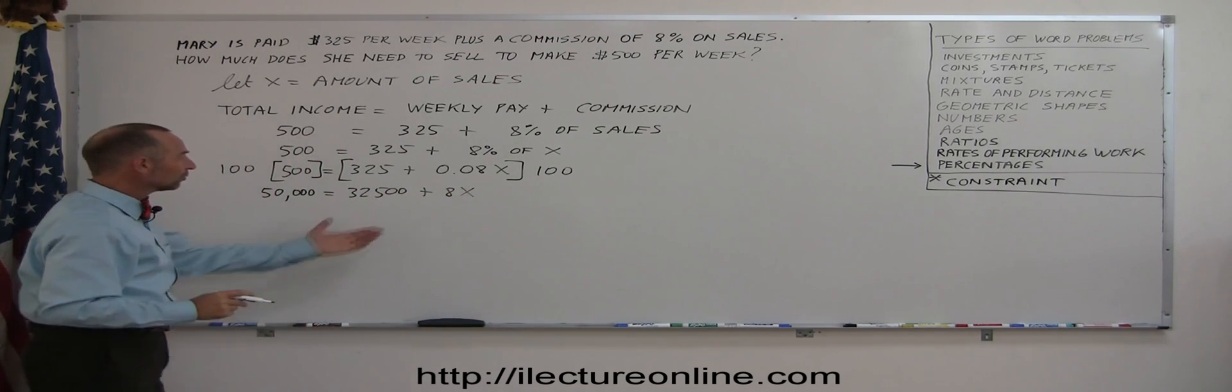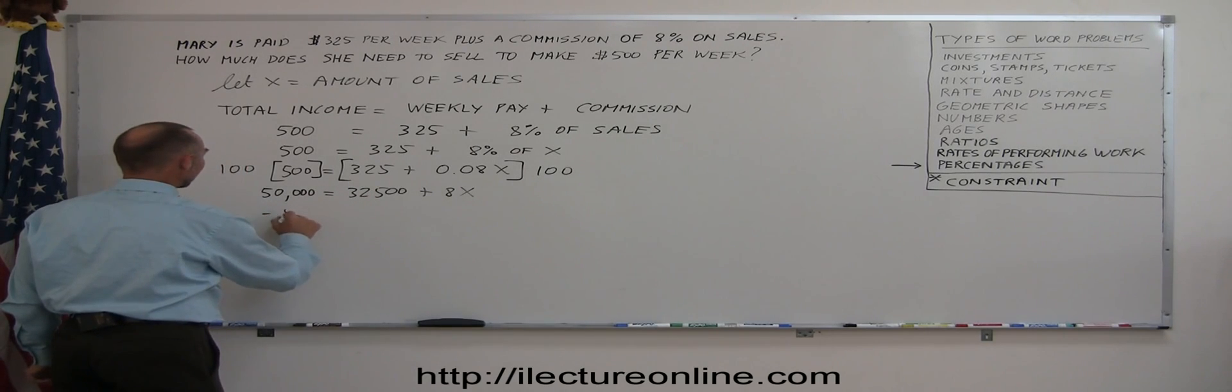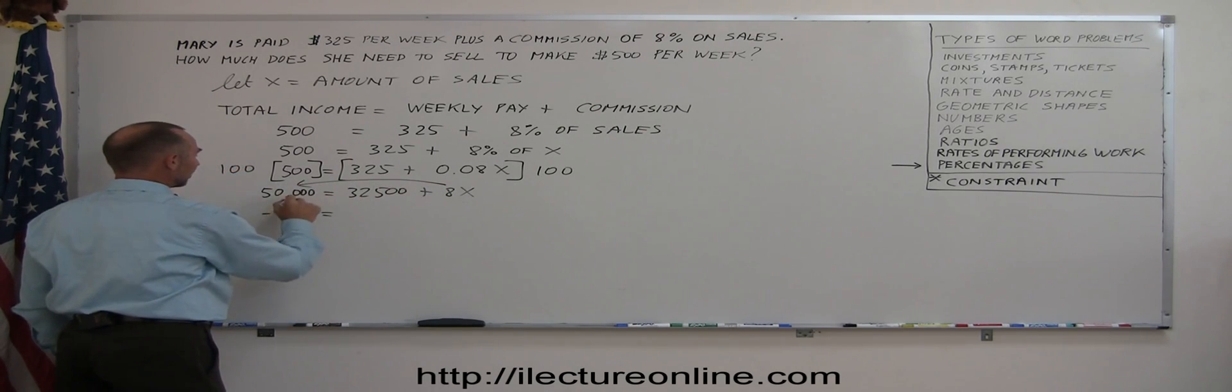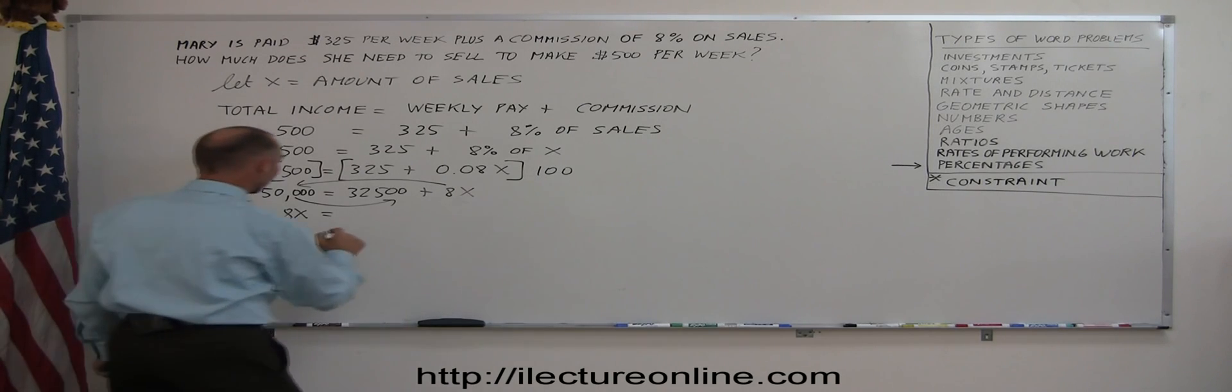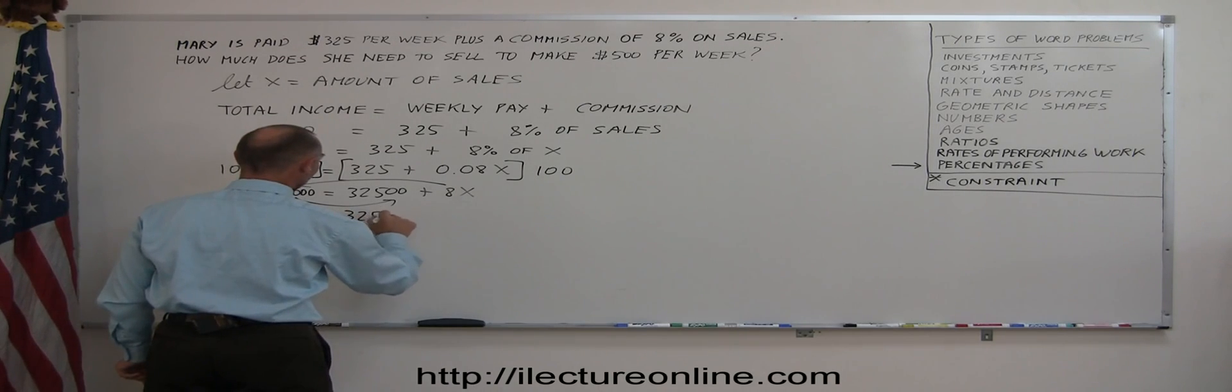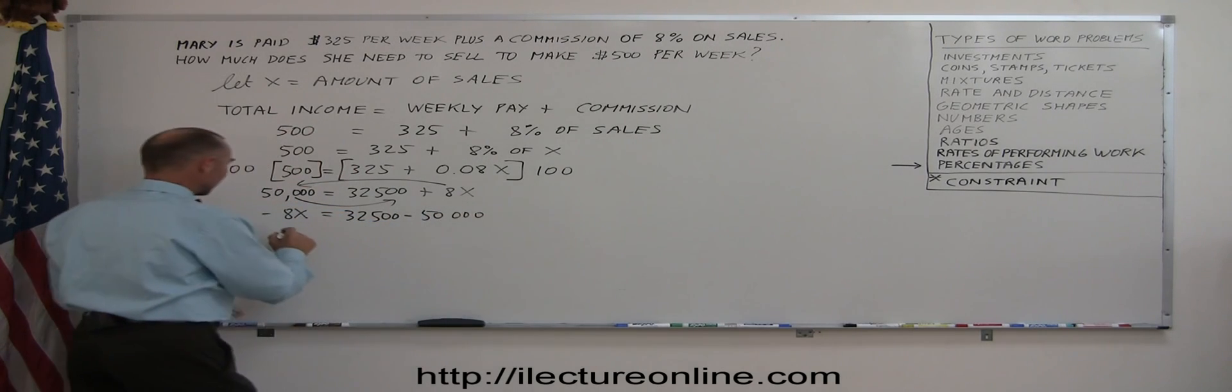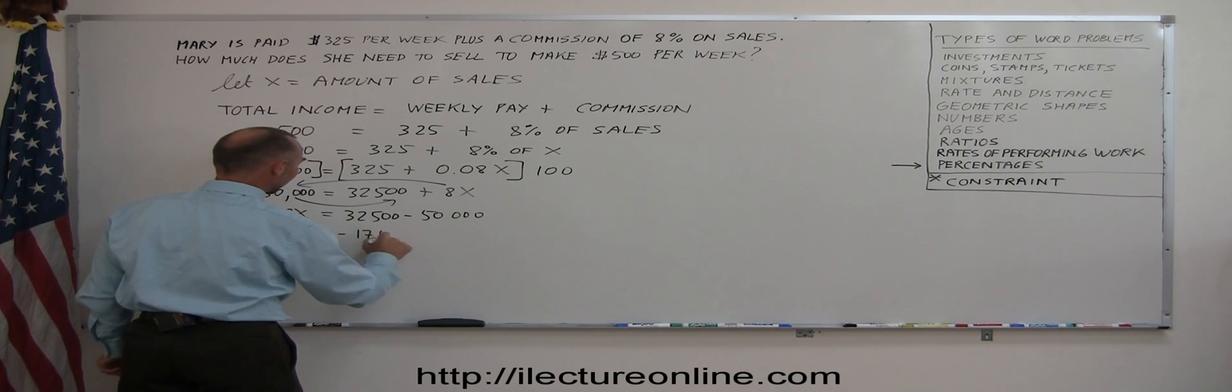Now the next thing I want to do is move all the X's to the left side, all the numbers to the other side. So it becomes minus 8X. Remember, whenever we cross the equal sign, we change the sign and the 50,000 goes across here. That changes sign as well. So minus 8X equals 32,500 minus 50,000. We end up with minus 8X equals minus 17,500.